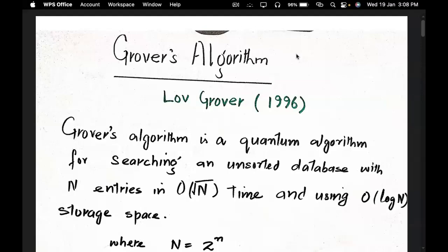Hello everyone. Our topic is Grover's algorithm. This algorithm was given by Lou Grover in 1996. It is basically a quantum search algorithm. The definition of Grover's algorithm is that it is a quantum algorithm for searching an unsorted database with N entries in the order of square root of N time, and it will use log N storage space.